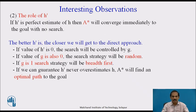The second interesting observation is the role of H'. If H' is a perfect estimate of H, the A-star algorithm will converge immediately to the goal with no search. The better H' is, the closer we get to the direct approach. If H' equals 0, the search will be controlled by G. If G is also 0, the search strategy will be random. If G equals 1, the search strategy will be breadth-first. If we can guarantee that H' never overestimates H, A-star will find an optimal path to the goal.